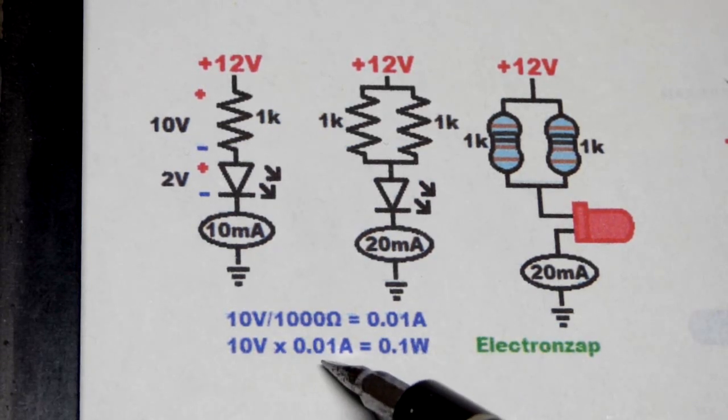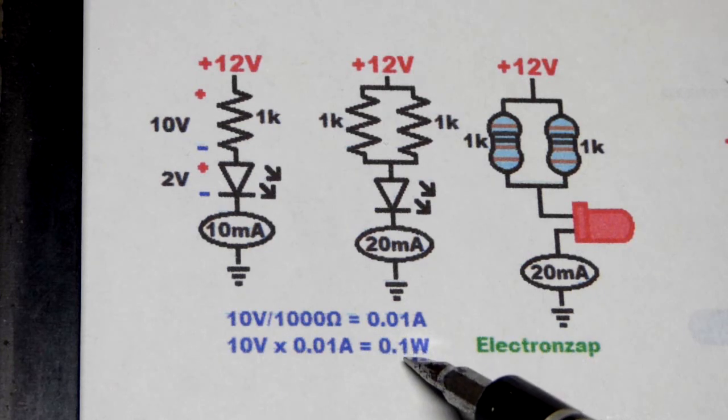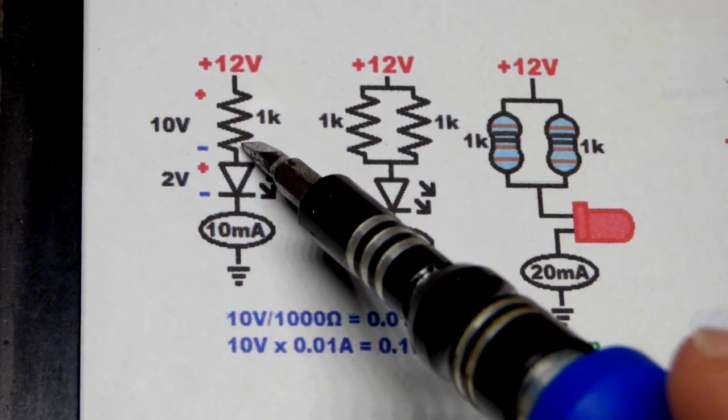You can take that voltage and current and multiply them together. It's 0.1 watt, which is close to half of a quarter watt, which you don't want to exceed. That's what they're usually rated for.